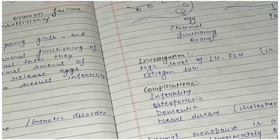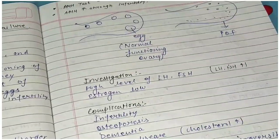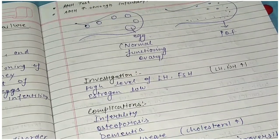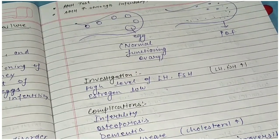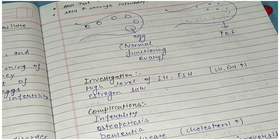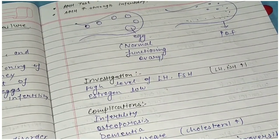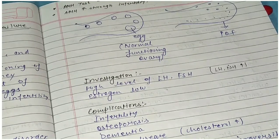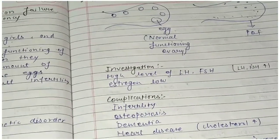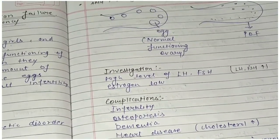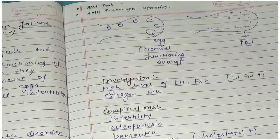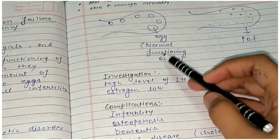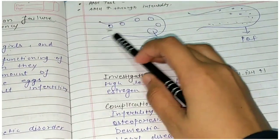The most distressing symptom is loss of fertility in 54% of females, and feeling older. The main result of POF is infertility — simply, if the ovaries don't do their work, they will not produce eggs, and fertility will be affected.